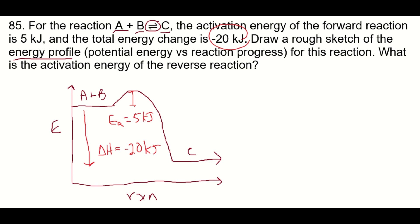Now let's consider the reverse reaction where C turns into A and B. So the delta H here, the change in energy between the reactants and the products is positive 20 kilojoules. So that's an endothermic reaction. It's going to absorb that amount of energy.